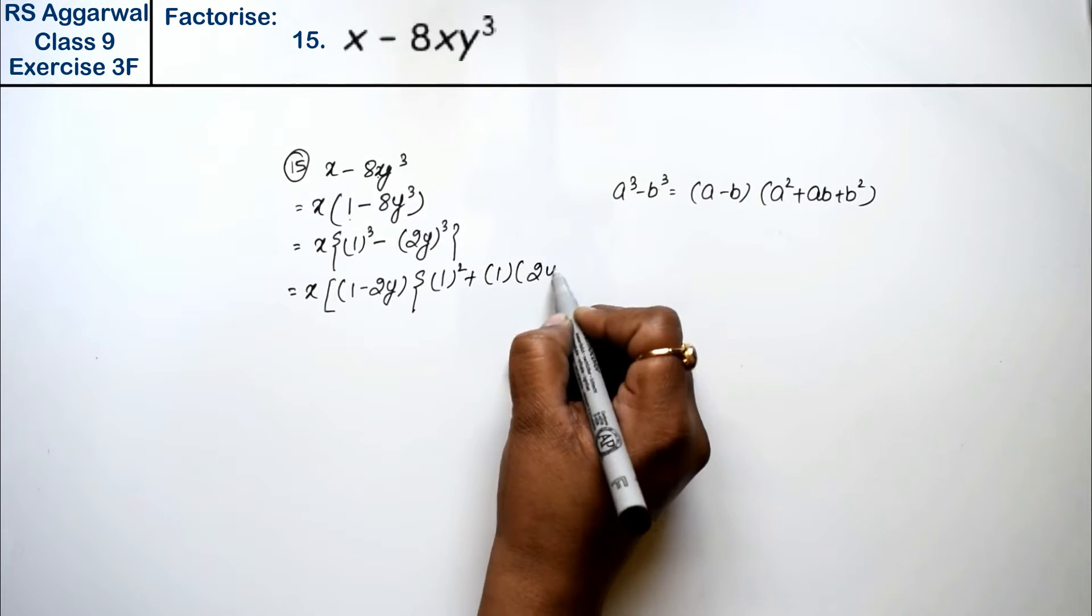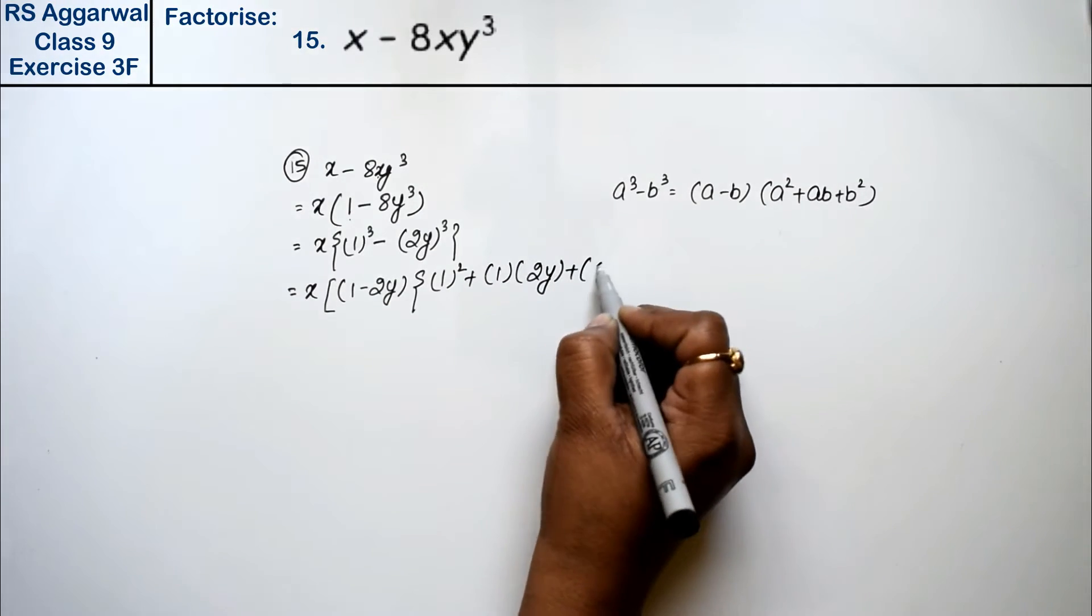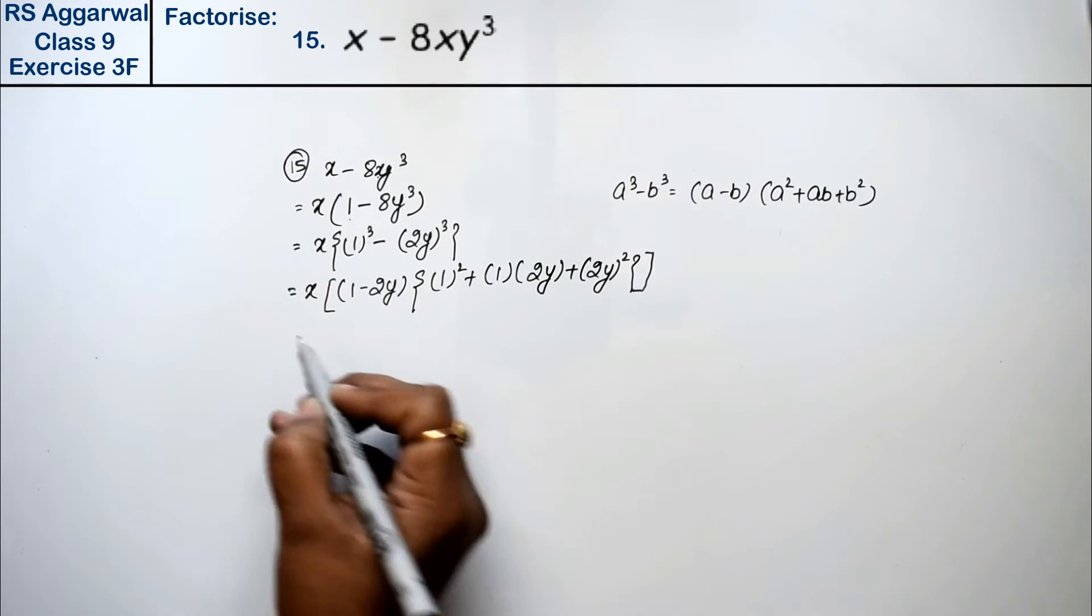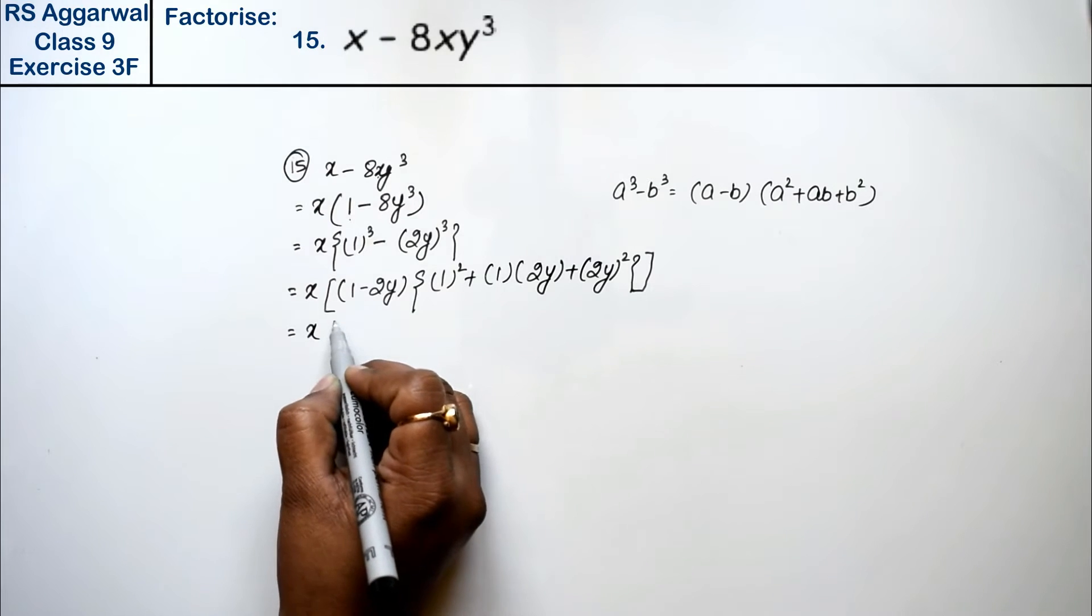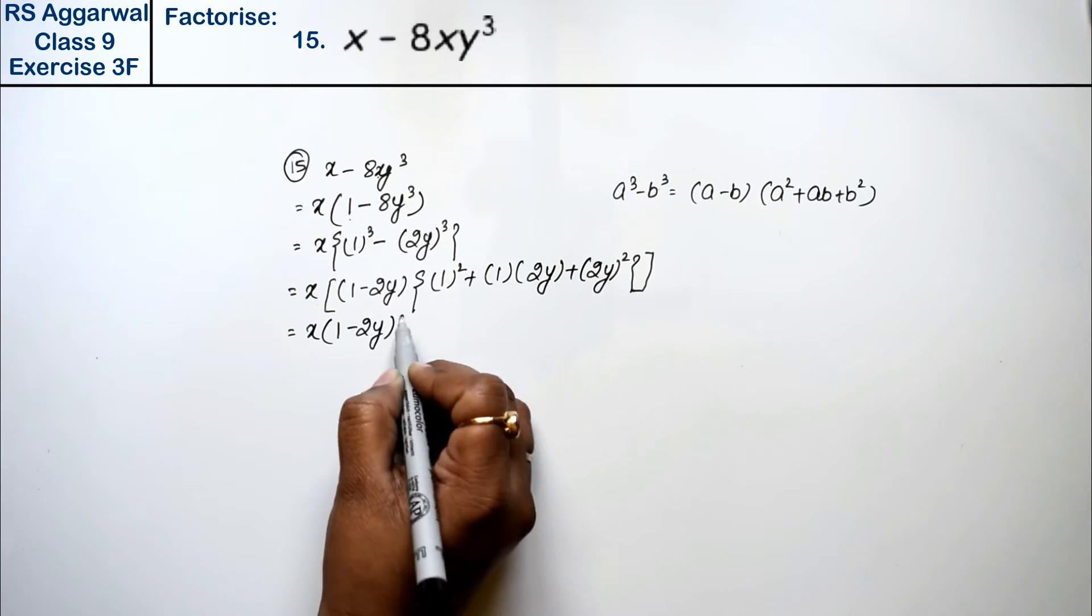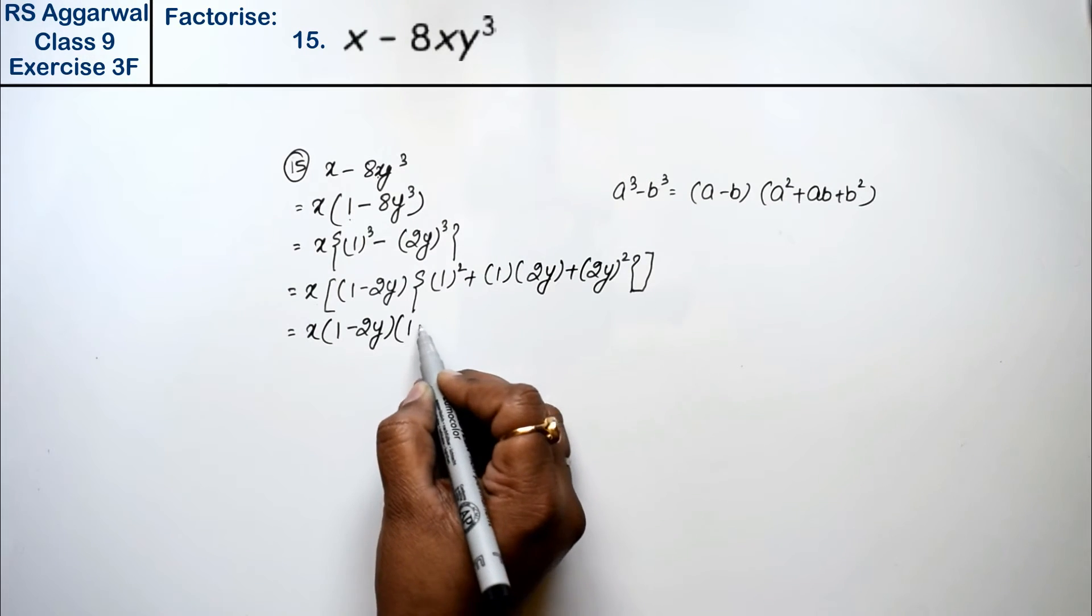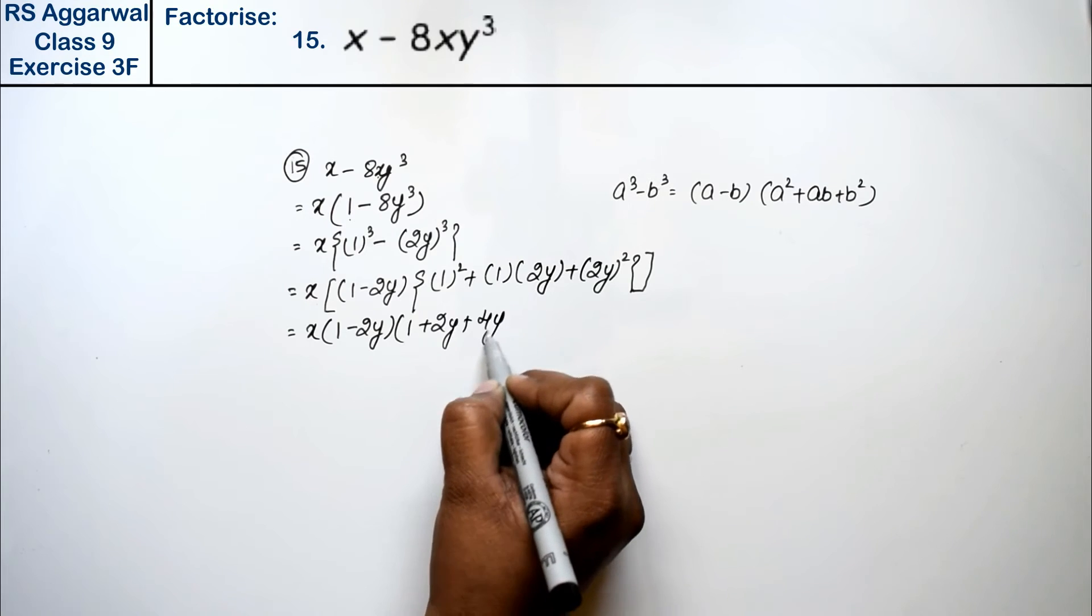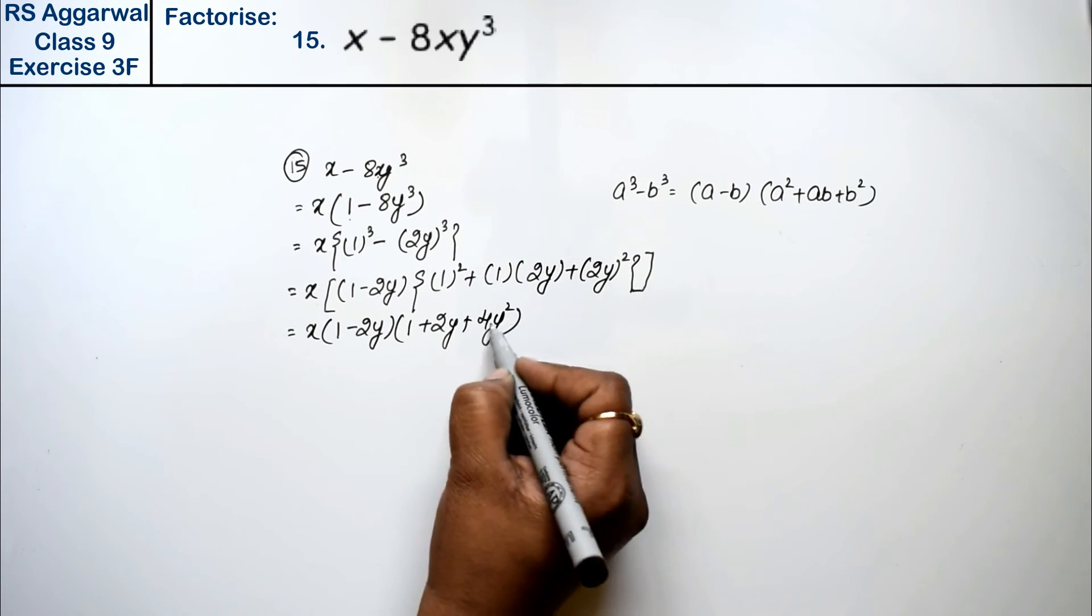...plus 2y whole square, big bracket closed. So this is how much? x into 1 minus 2y, 1 squared which is 1 plus 2y plus 4y square is the answer.